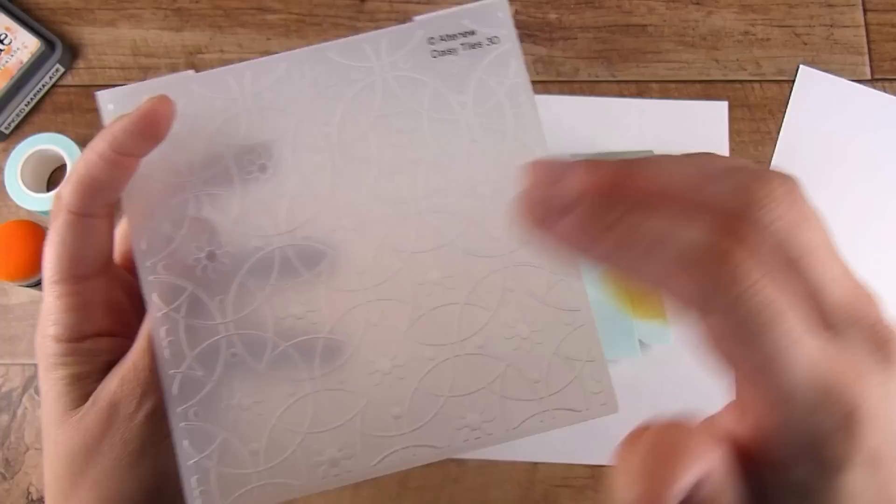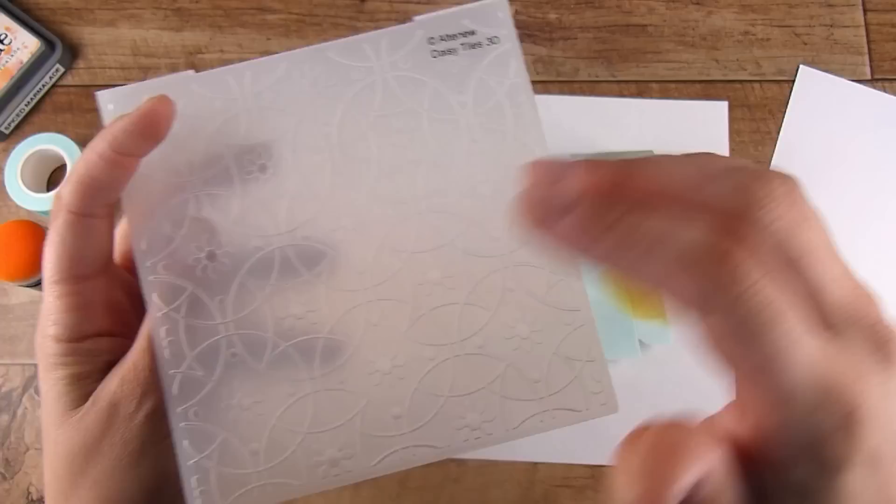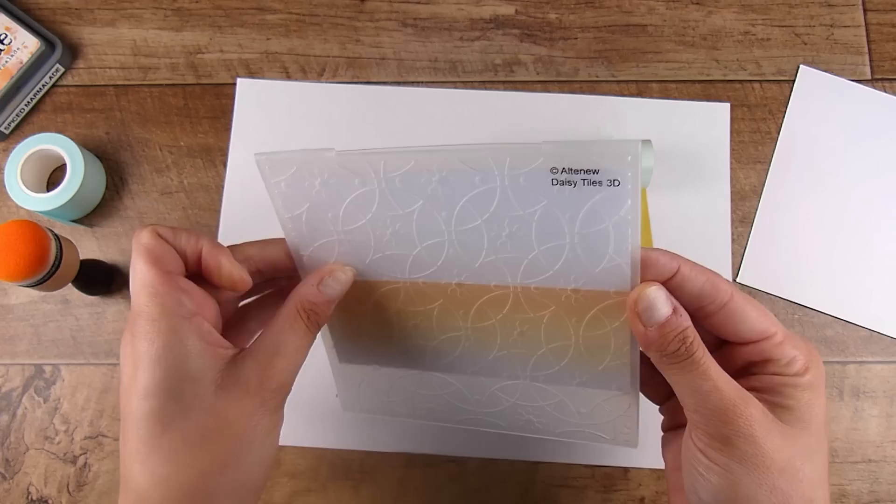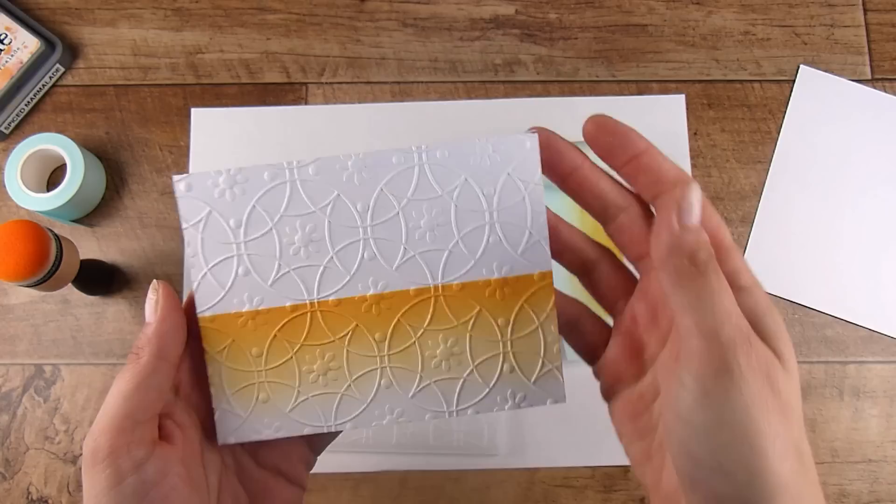Look at that beautiful crisp line. This is the Daisy Tiles 3D embossing folder from Altenew. You don't have to have special embossing folders for this, I just love this pattern. When you get this out with some of the coloring, it enhances beautifully.